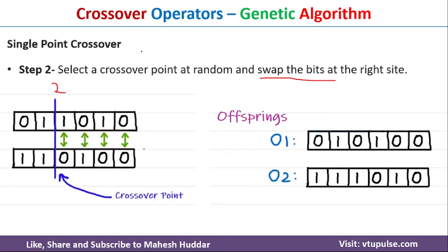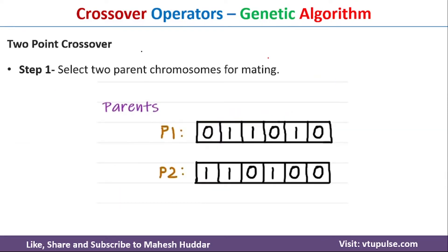So in this case, on the right side of the crossover point, the first parent has 1010, which becomes part of offspring O2, and 0100 from parent 2 becomes part of O1. This is how the single point crossover operator works in genetic algorithm.